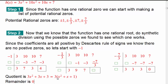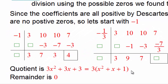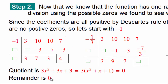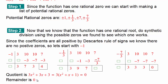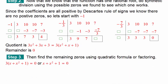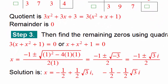That means our quotient is 3x squared plus 3x plus 3. We can factor out a 3, giving us x squared plus x plus 1 as our quotient. For step 3, we set this equal to 0 and solve for x, so we're looking at x squared plus x plus 1 equals 0. The remainder is 0, which confirms that negative 7 thirds is one of our rational roots. Pause the video and apply the quadratic formula, then come back and check your answer.